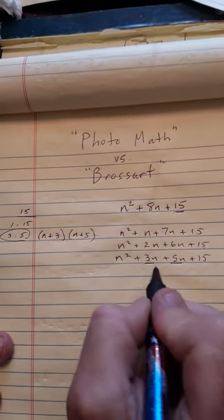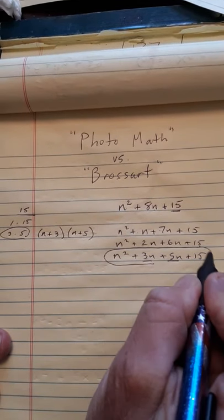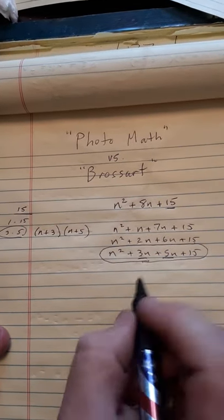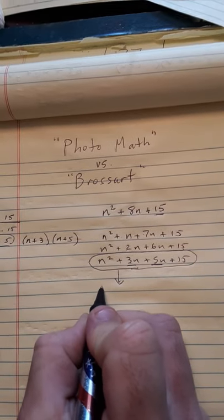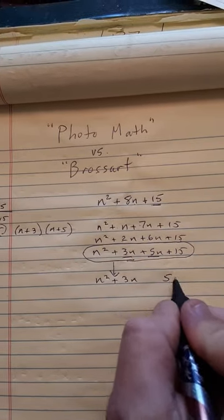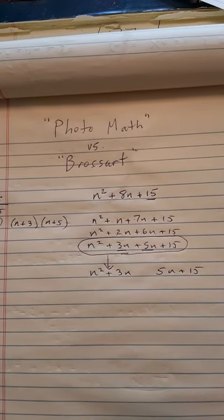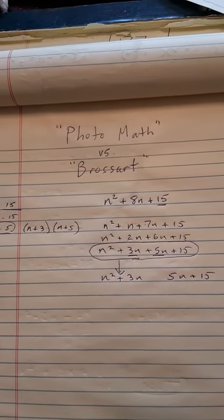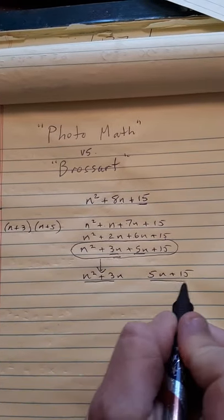But we're not even done yet. Because now that I'm going to use this, Photo Math is saying let's look at each part: n² and 3n, and let's look at the 5n + 15. Now Photo Math is saying factor these two expressions.